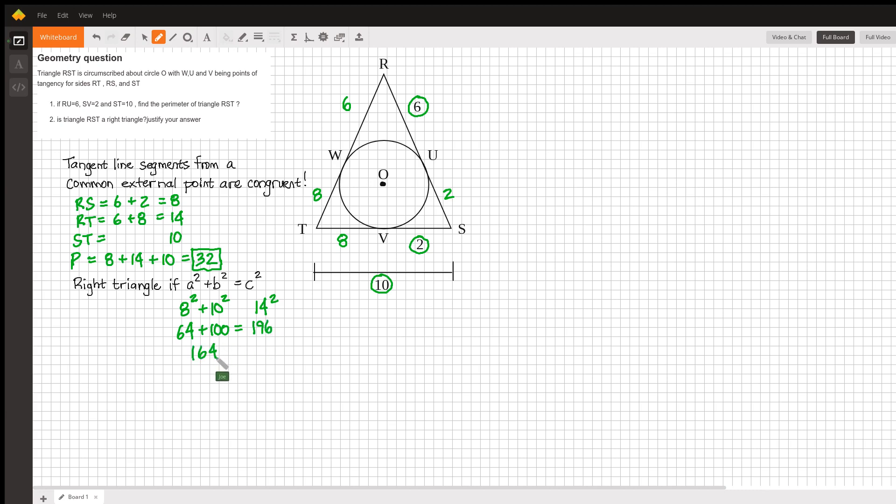Meaning that we have 164 on the left and 196 on the right. And since those are clearly not equal to each other, then we also know that this is not a right triangle.